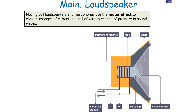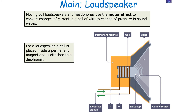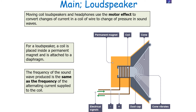The moving coil loudspeaker and headphones use the motor effect to convert changes of alternating current in a coil of wire to changes of pressure in sound waves. Looking at the schematic diagram of a loudspeaker, a coil is placed inside a permanent magnet, which is then attached to a diaphragm or cone. The frequency of the sound wave produced is the same as the frequency of the alternating current supplied to the coil, and the vibrating cone produces variations in air pressure which develop into a sound wave.